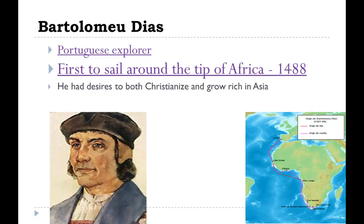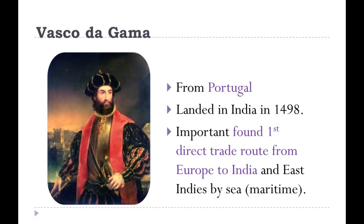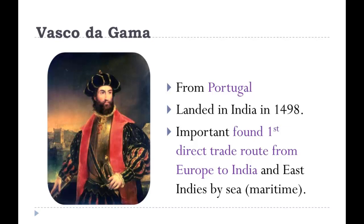They began to colonize that area. He wanted to find the route to Asia around this big land mass, and he found it in 1488. Then Vasco da Gama, also from Portugal, kept going around the Cape of Good Hope ten years later in 1498. He was the first to find the direct trade route from Europe to India and the East Indies by sea — the maritime route. Now they could sail around Africa, get to the East Indies, and carry back more cargo faster than the Silk Road. This is really when the Silk Road began its decline.